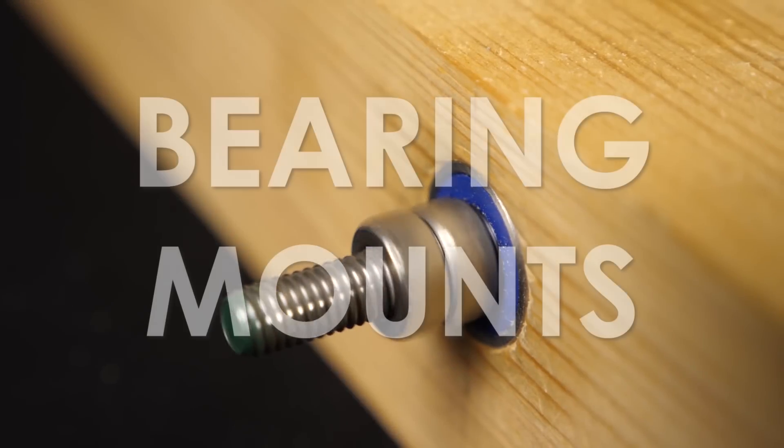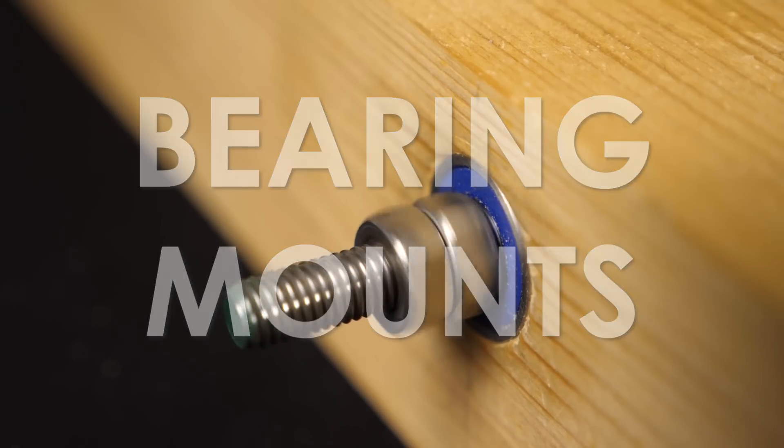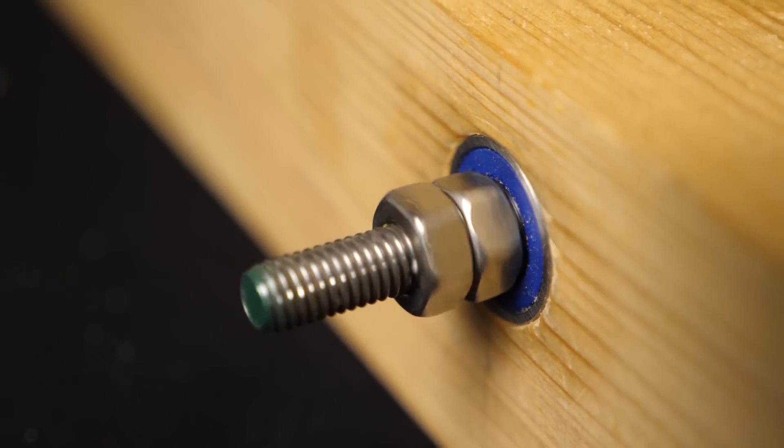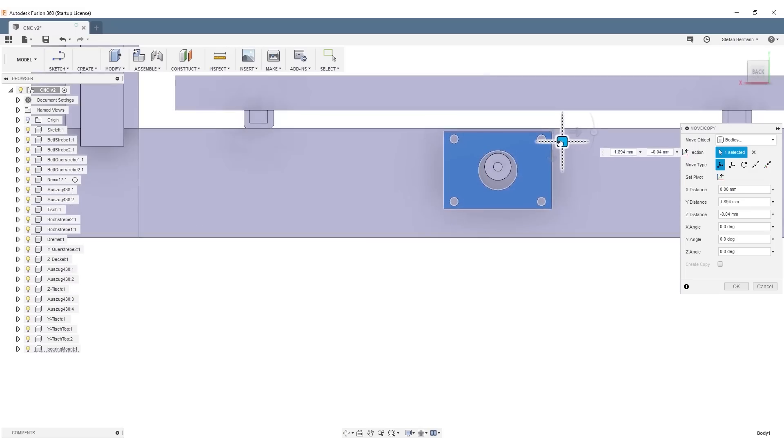So I had been mounting the roller blade bearings directly in the composite wood. The problem is that if you're not 100% aligned your lead screw might lock up. So today I would rather mount the bearings in a separate piece of wood that I can then slightly move to align everything.